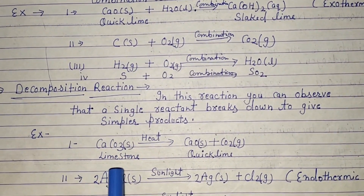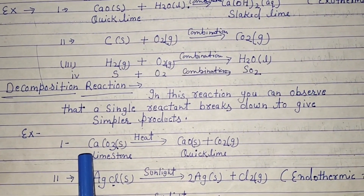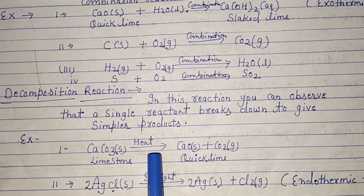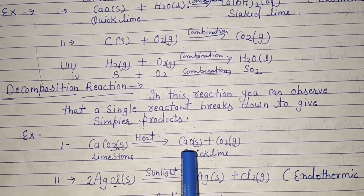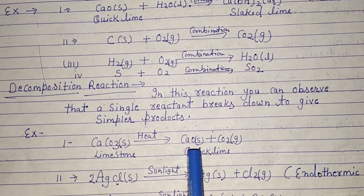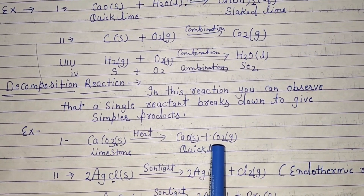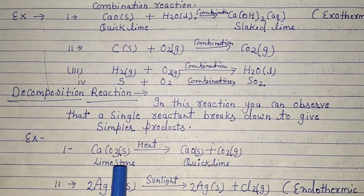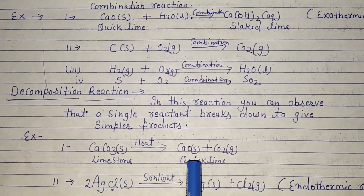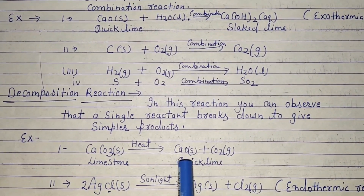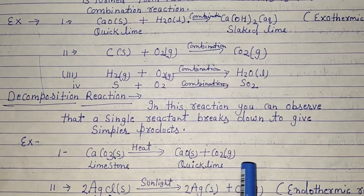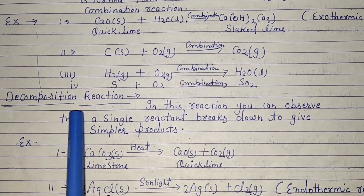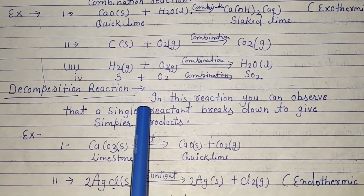For example: calcium carbonate, when heated, gives calcium oxide plus carbon dioxide. So one single reactant breaks down into different products — that is called a decomposition reaction.